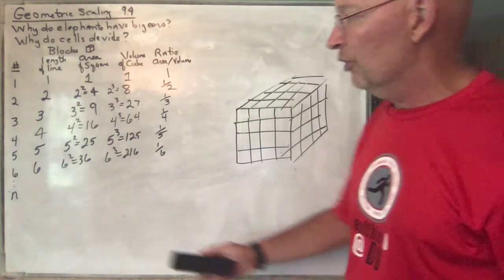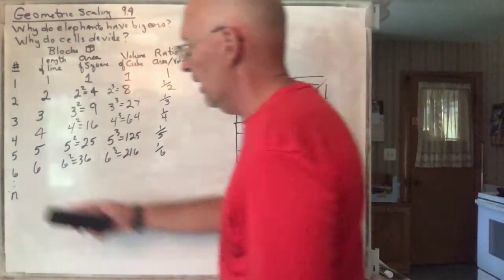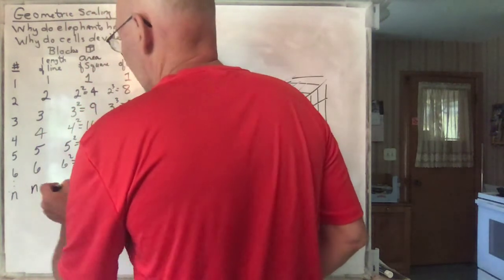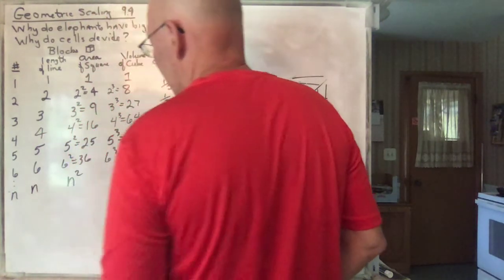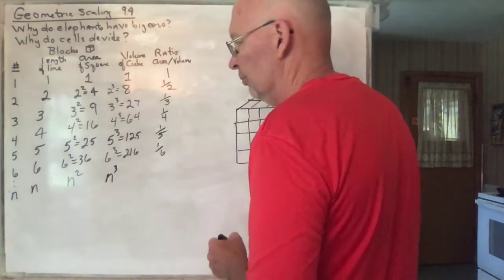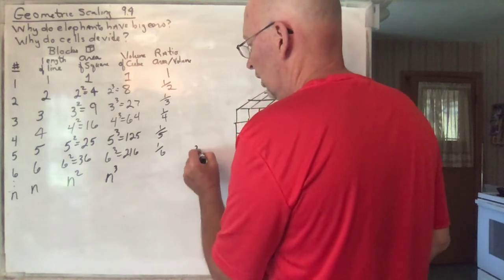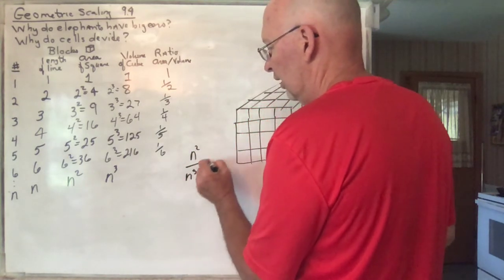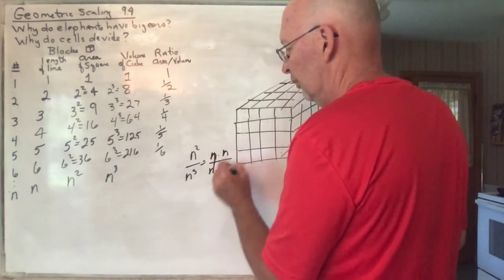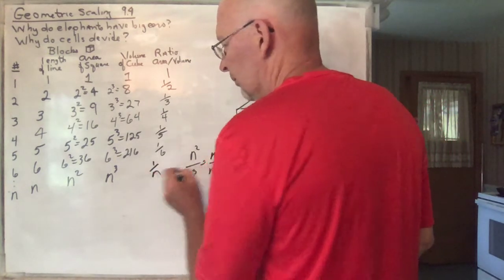Mathematicians like to generalize it. If you go out to just something with number n, then the length is going to be n, the area is going to be n squared, and the volume is going to be n cubed. The ratio of n squared divided by n cubed is n times n over n times n times n — two of those cancel out, and you're left with one over n.